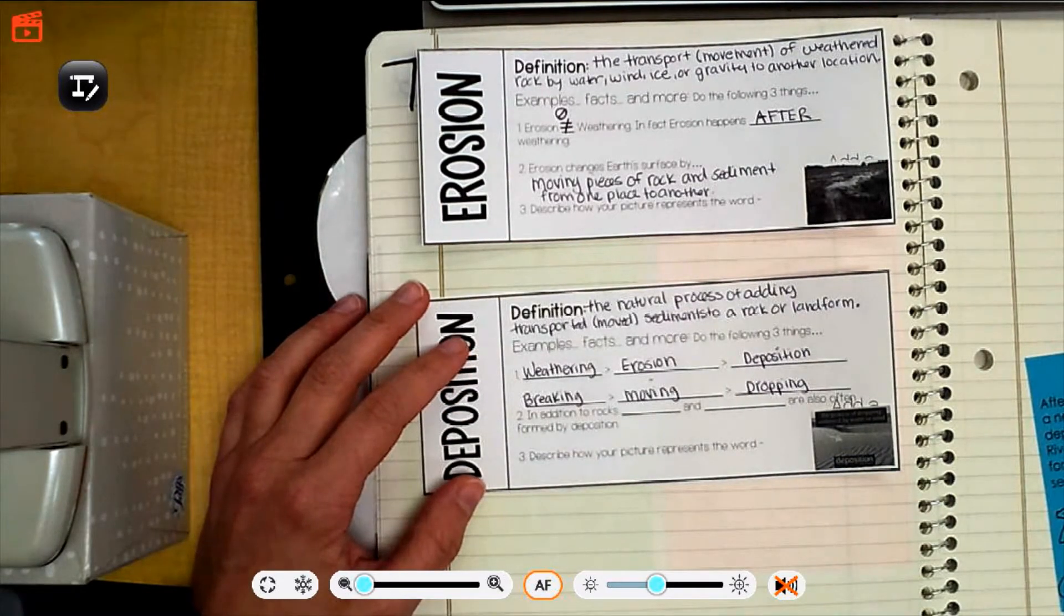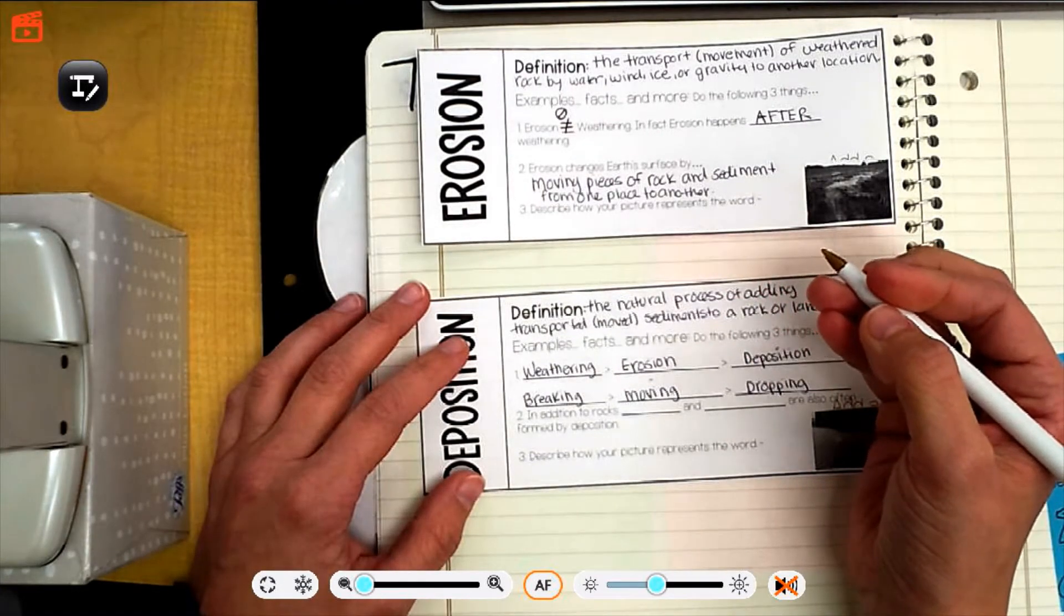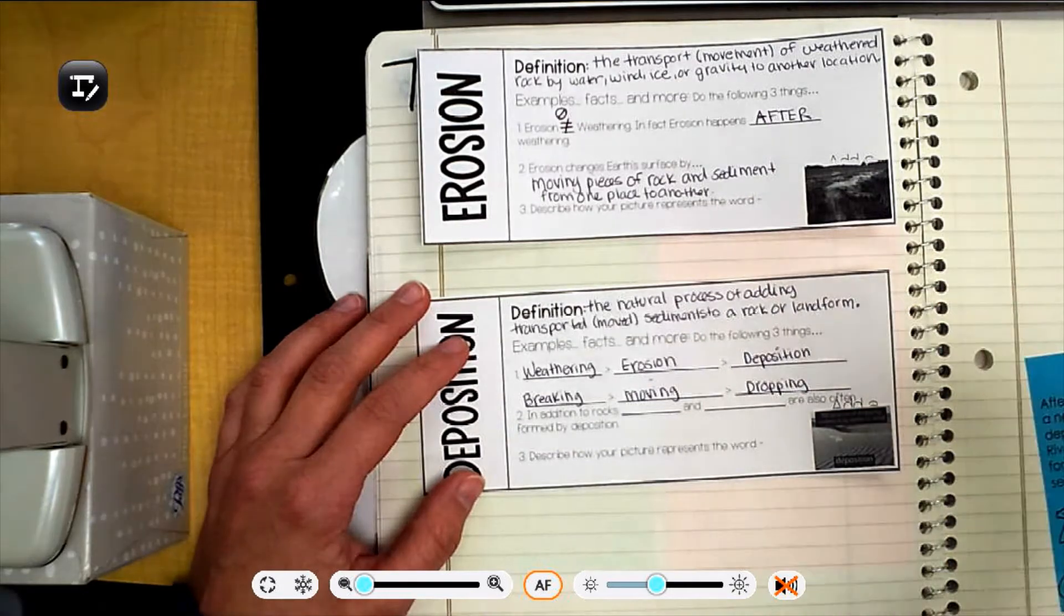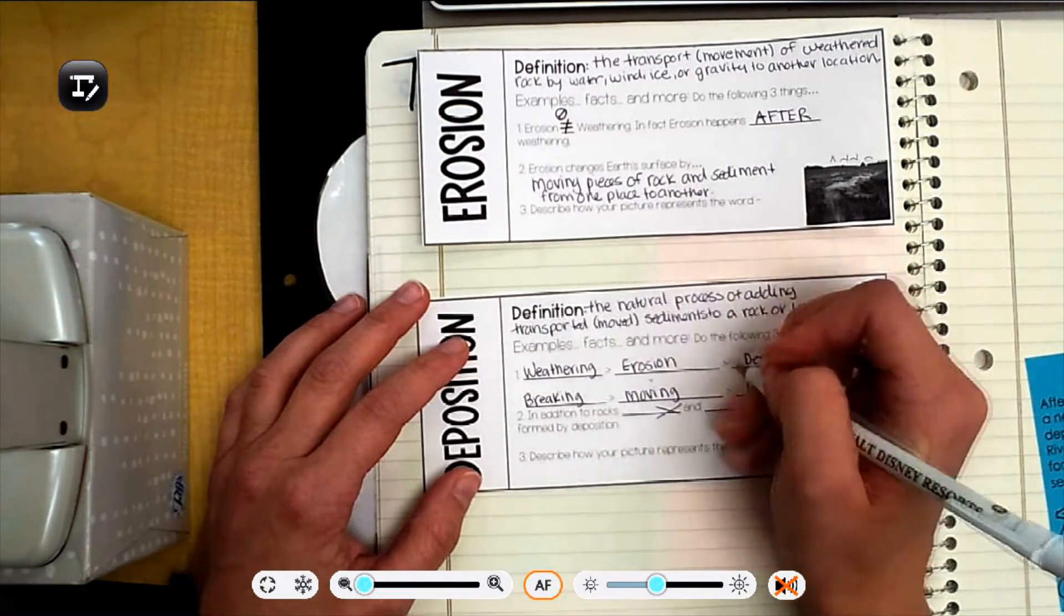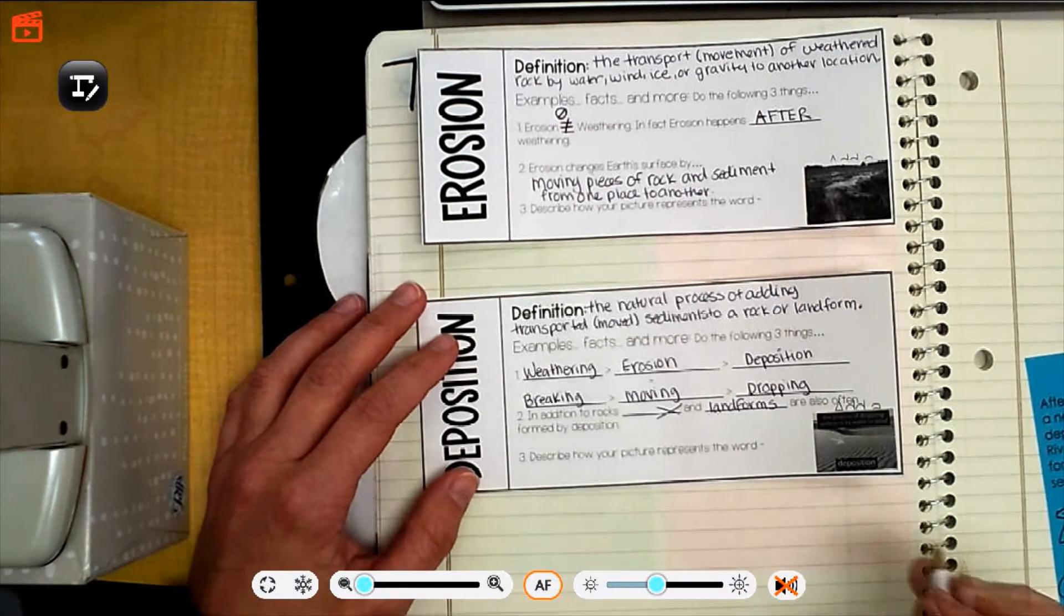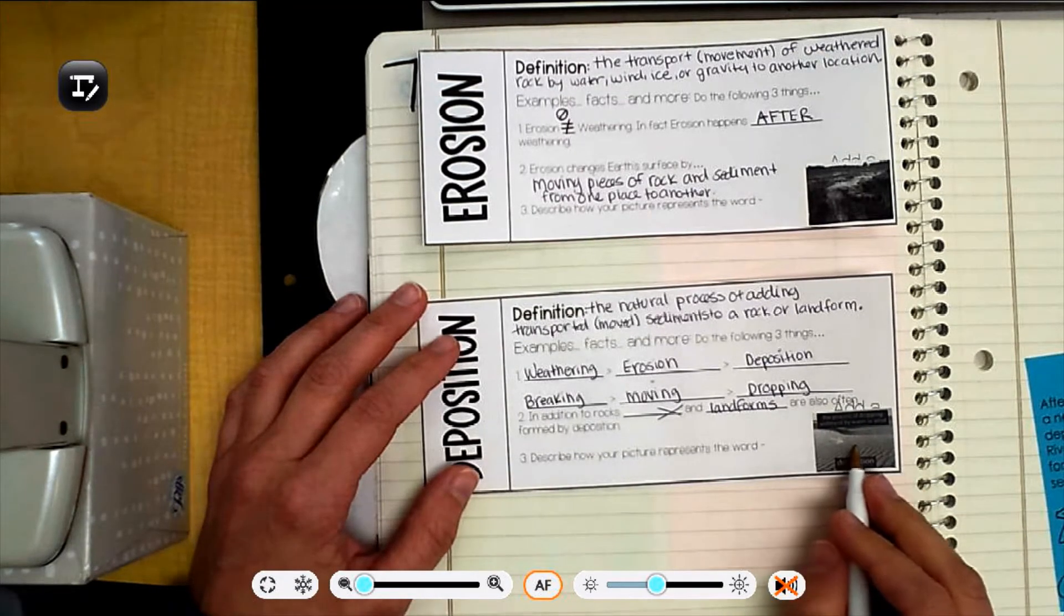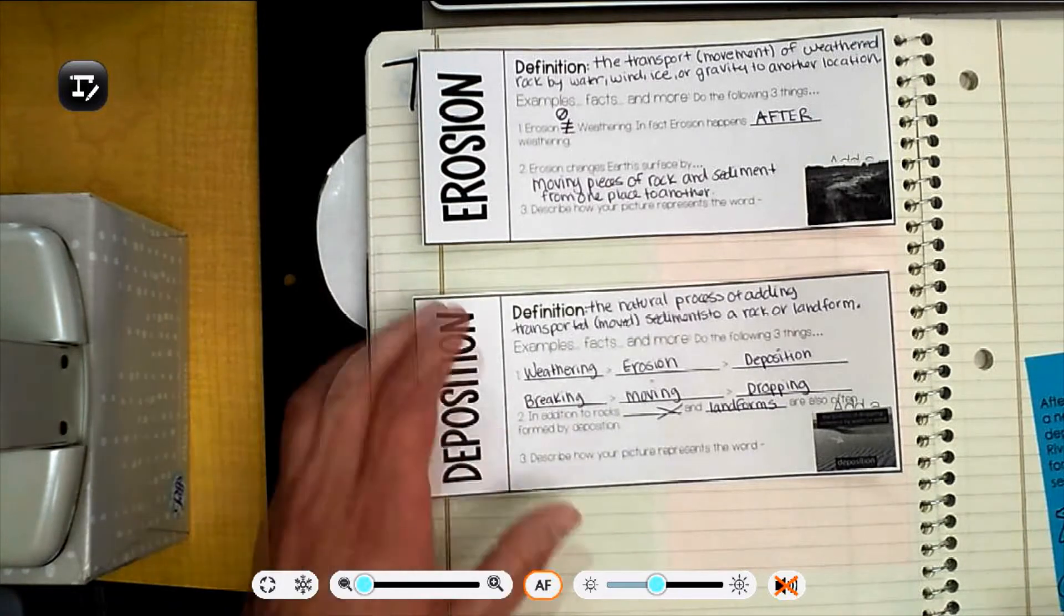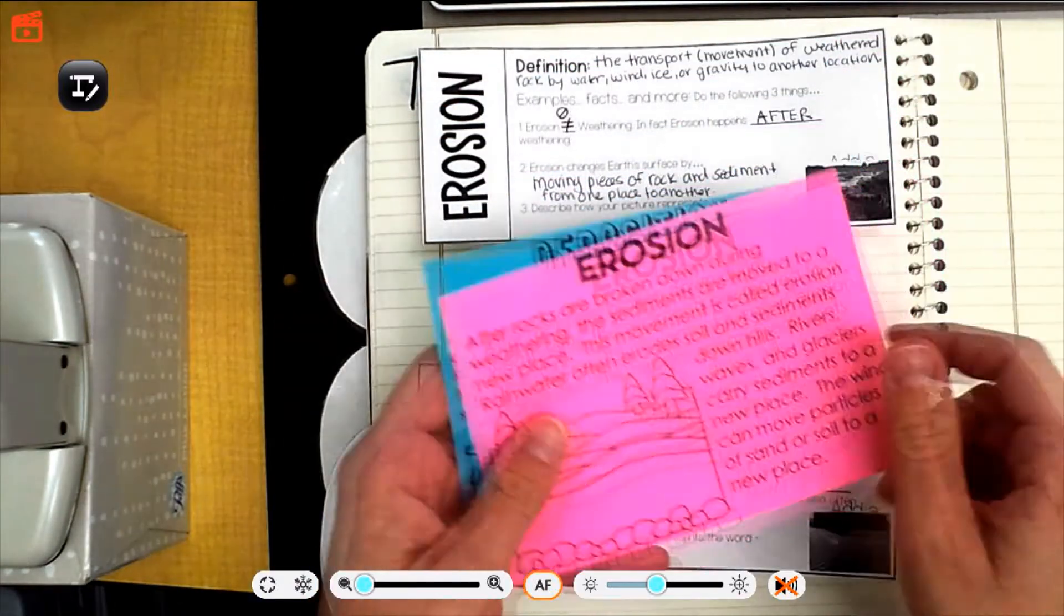In addition to rocks, landforms are also often formed by deposition. So this tells you right here, the process of dropping sediment by water or wind. So how would sand in a new place get deposited there? We're going to glue this one down at the bottom. But we're going to read and underline through these. You need to get something to underline on these ones with.